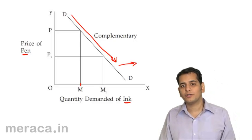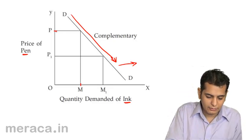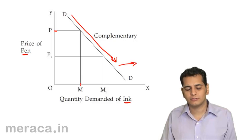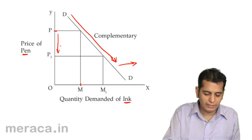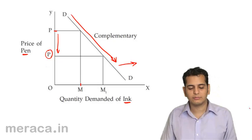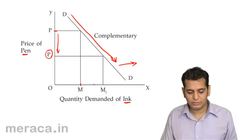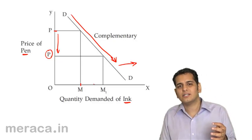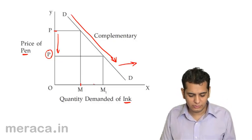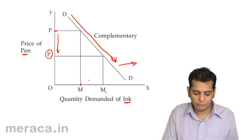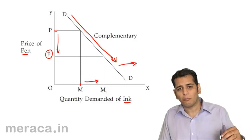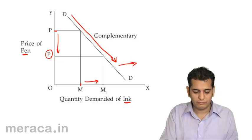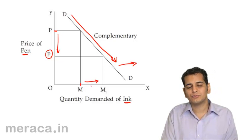We are consuming M quantity of ink at price P of pen. Now, when the price of pen falls to P1, the consumption of pen increases because its price has fallen. Since the consumption of pen increases, the quantity of ink also increases — because for more pens, you require more ink. So we can relate the two things inversely: when the price of pen falls, the quantity consumption of ink will increase.